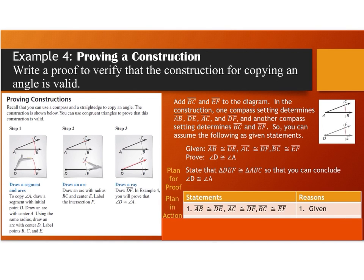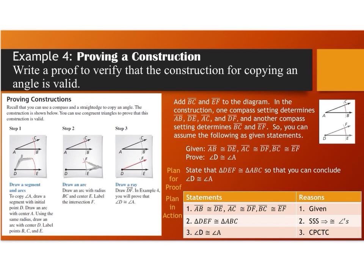Here's the plan in action. For your statements: all pairs of corresponding sides are congruent, reason given. That means we can conclude by side-side-side that triangle DEF is congruent to triangle ABC. Once the triangles are congruent, we can conclude that all remaining parts of the triangles are congruent, which allows us to say that angle D is congruent to angle A because corresponding parts of congruent triangles are congruent.